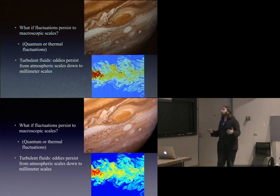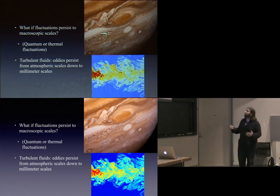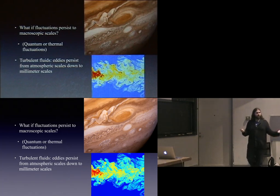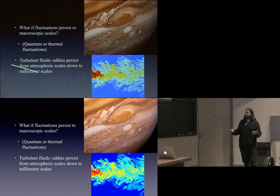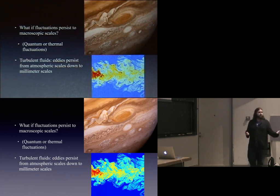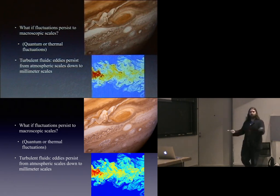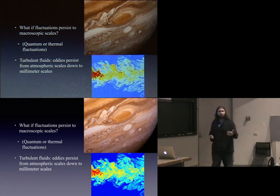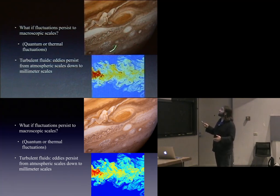The question is how do you keep track of this? This seems like an impossible problem to put on a computer, because you have to care about things down to the millimeter scale, but if you want to model the atmosphere, that's just too many grid points. We have to come up with a better way of understanding how to go from these super short distance scales to much longer distance scales.